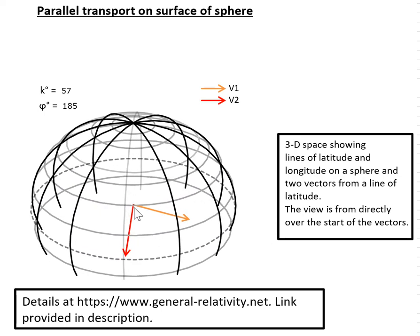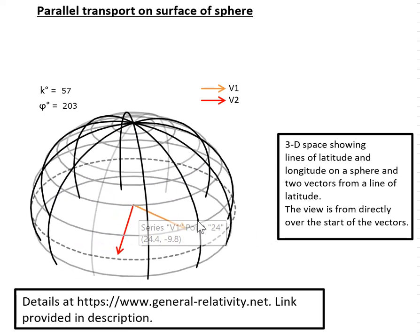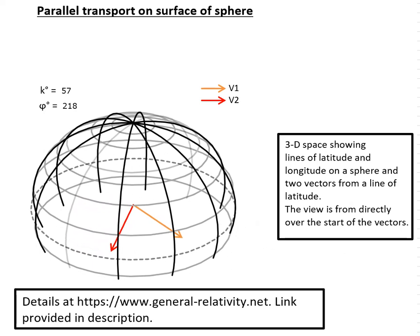This is because we're on the surface of a sphere. But the length of these two vectors is staying about the same, and the angle between them is staying about the same. And if you look at the parallel transport equation, that's exactly what should happen.